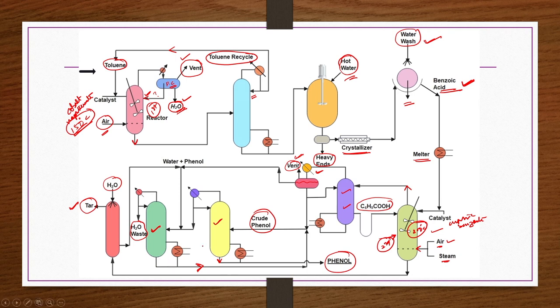The purification of phenol takes place in two stages because water and phenol form an azeotrope. The crude phenol is taken to a final fractionator where pure phenol is collected as the bottom product, while water containing some phenol fractions is collected from the top and can be recycled back to the previous fractionator.